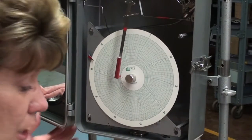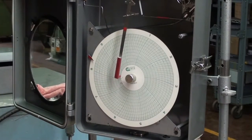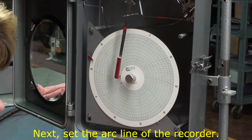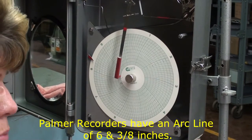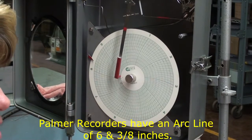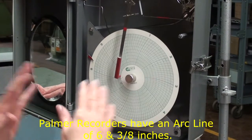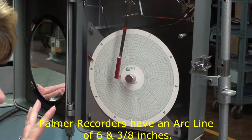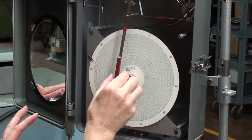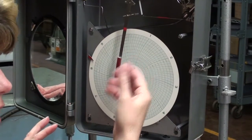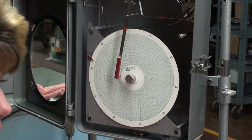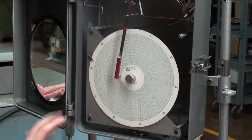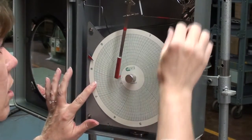After you get the pin tension set, then you can work on the arc line of the recorder. And the reason that an arc line is so important is it is a point of calibration that is always the same. If you just calibrate this recorder like it is right now, any time you remove this pin and put it back on, your calibration is going to change if you do not put it back on the arc line. The arc line is a measured distance. So let's check our arc line.